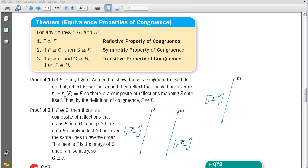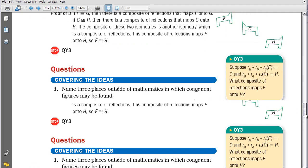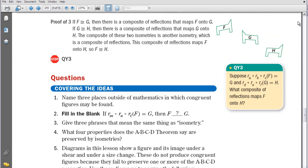The third one is called the transitive property of congruence. We've studied that in terms of equality and inequality. Now we're going to look at it in terms of congruence. If I do a composite of reflections to have F map onto G, that means F and G have to be congruent to each other. And then if I perform another composite reflection and have G map onto H, that means G and H need to be congruent to each other.